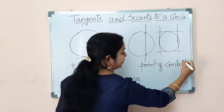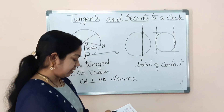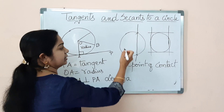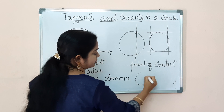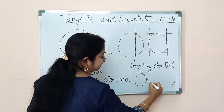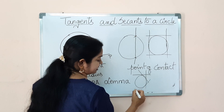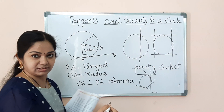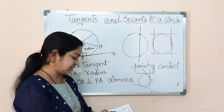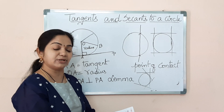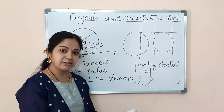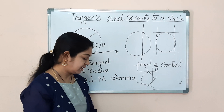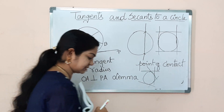We can draw infinite tangents to a circle — that means an innumerable number of tangents can be drawn. So the answer is infinite. These are the important bits that are quite repetitive in your examinations.